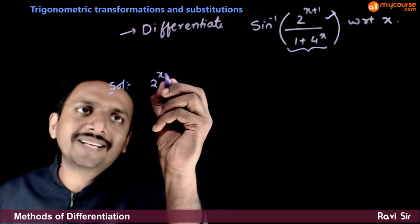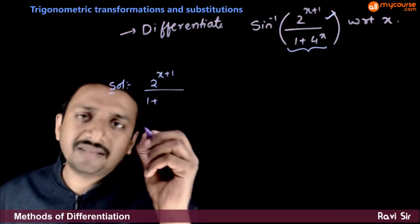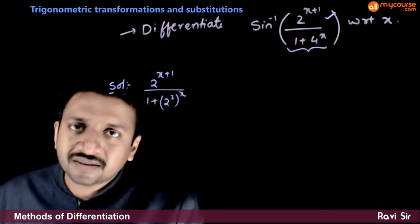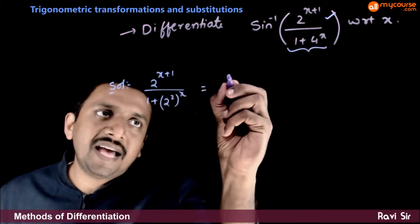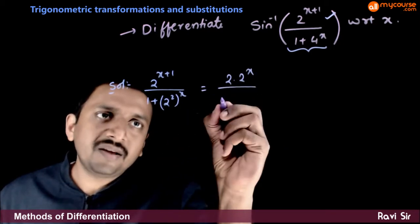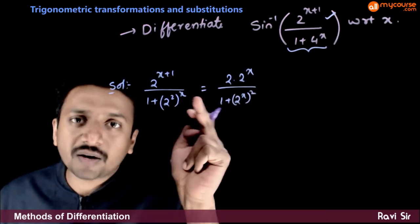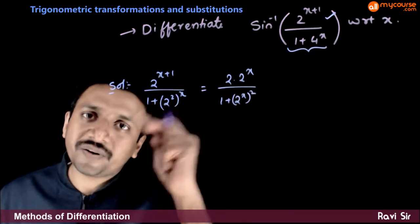So, 2 power x plus 1 by 1 plus 4 is 2 square whole power x, right? So, this can be written as 2 times 2 power x divided by 1 plus 2 power x whole square. 2 square whole power x is same as 2 power x whole square.